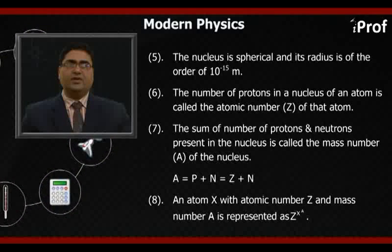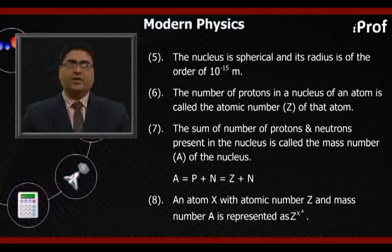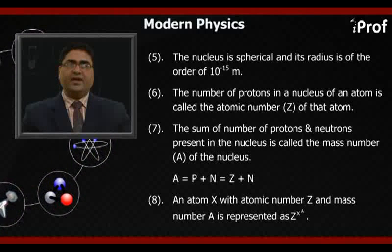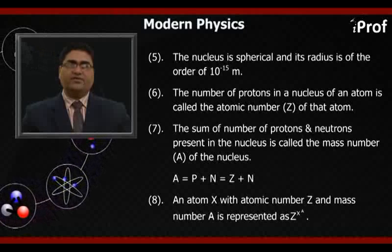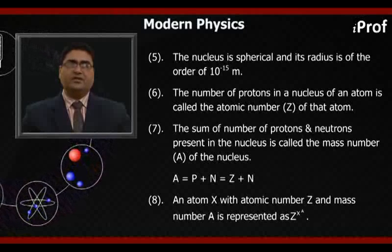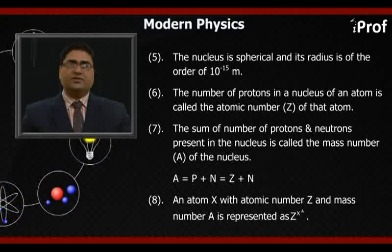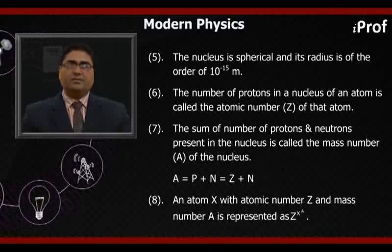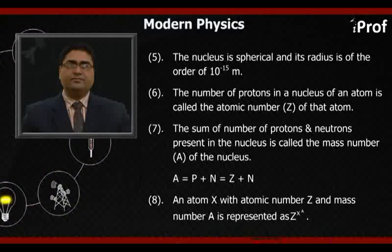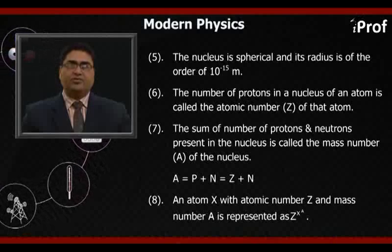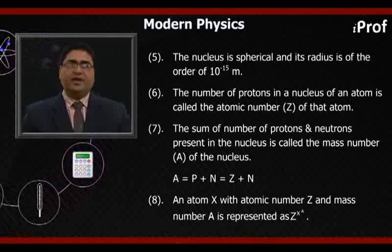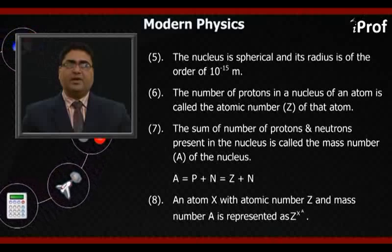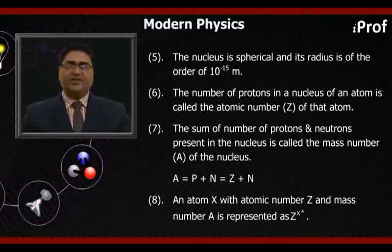Sixth, the number of protons in a nucleus of an atom is called the atomic number Z of that atom. Seventh, the sum of number of protons and neutrons present in the nucleus is called the mass number A of the nucleus. A equals P plus N equals Z plus N. An atom X with atomic number Z and mass number A is represented as Z-X-A.